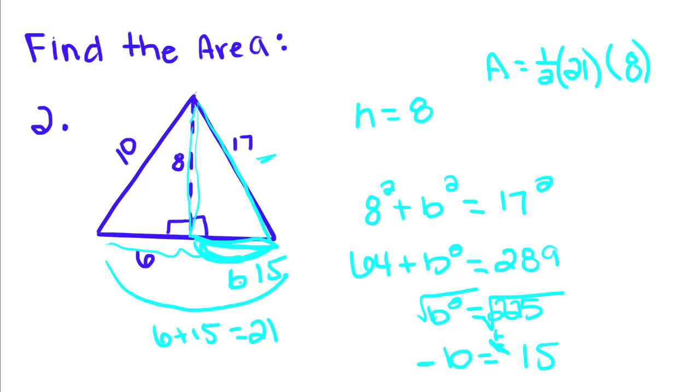Now it doesn't matter what order you multiply in, because multiplication is commutative. So I'm just going to do the easier one first. One-half times 8 is 4, times 21 is going to give you 84. So the area of this triangle is 84, and pretend this said inches, inches squared.